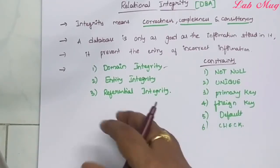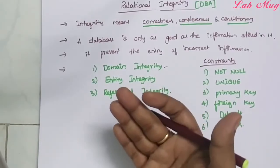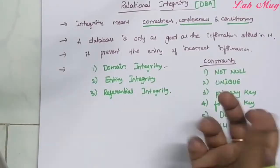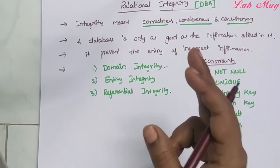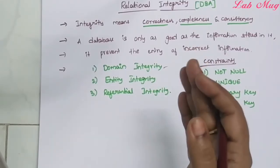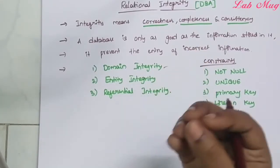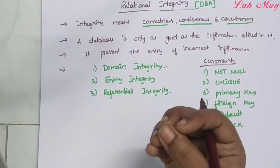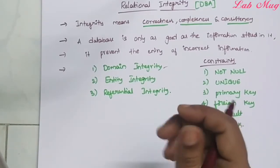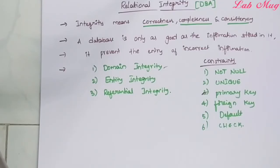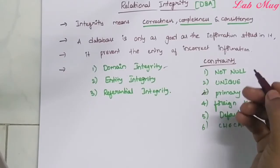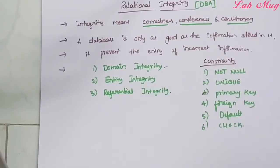We can maintain the same identity. For example, we can find another student entity — if we find two identical entities in the database, that creates duplication. This is the problem. That goes back to our topic: correctness, completeness, and consistency. That is entity integrity.